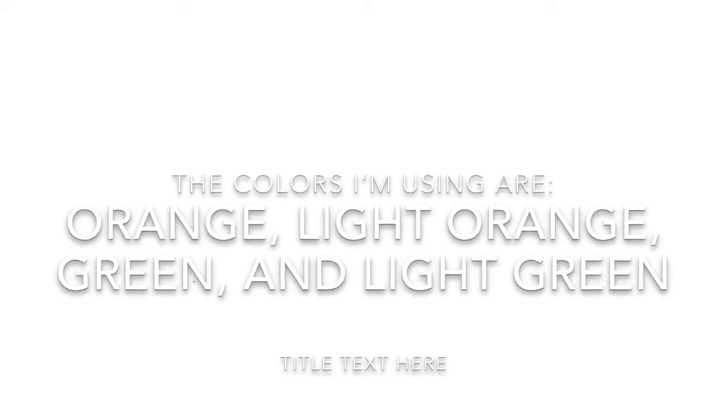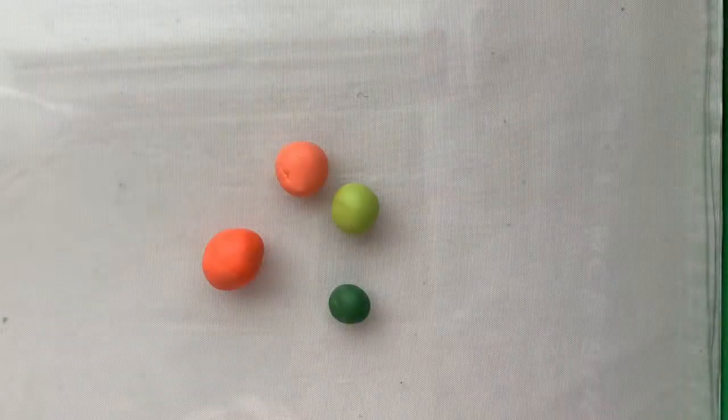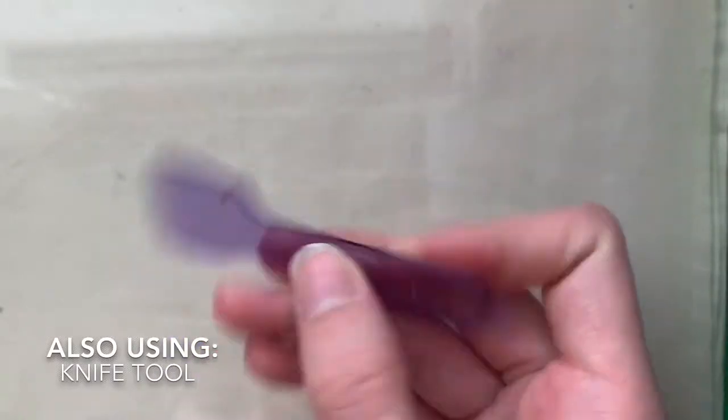Hello, today I'm going to make a carrot charm and magnet. The colors I'm using are light orange, dark orange, dark green, and light green. I'm also using a knife tool.